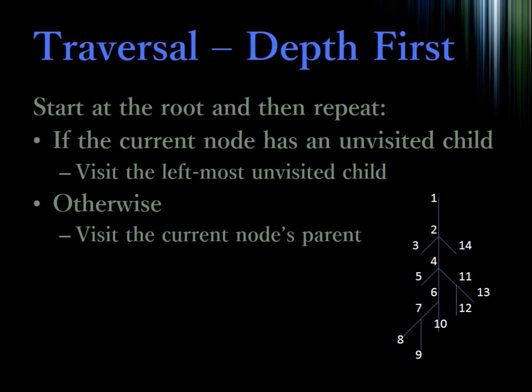So when we start at 1, the root node, we go to 2. 2 has children that are unvisited, so we go to 3. 3 has no unvisited children, so we return back to 2 and check if 2 has any unvisited children. Since it does, we proceed to 4, and then so forth. The goal of depth first search is we're essentially taking a single branch and following it as far as we can down to the leaf before returning to the previous nodes.